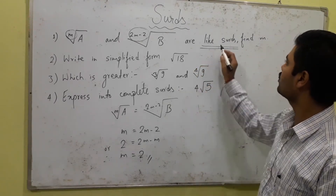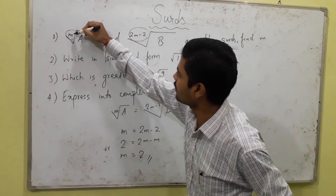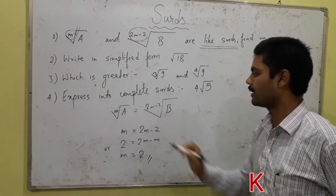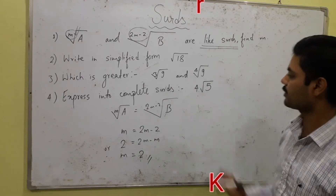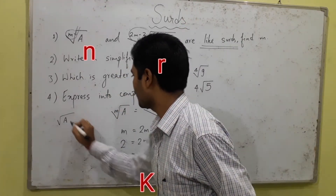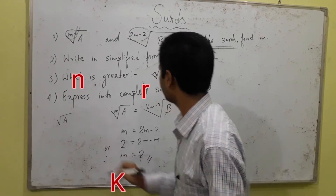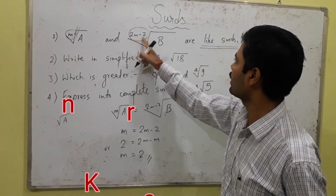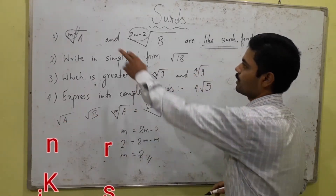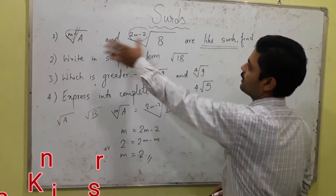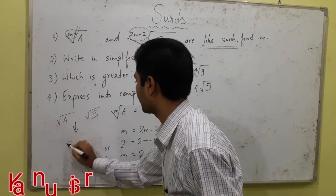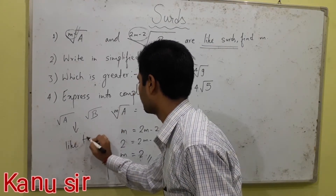Their power is the same, so you can equate the powers: m equals 2m minus 2 because they are like surds. Substituting m equals 2, the actual terms become root a and root b, and hence they are both called like terms.